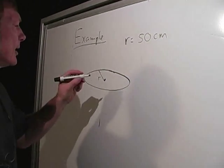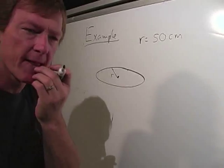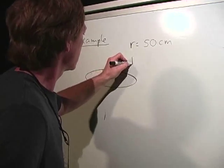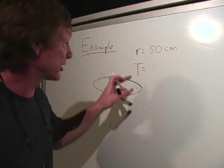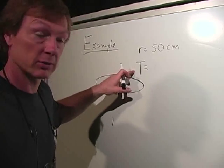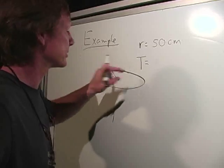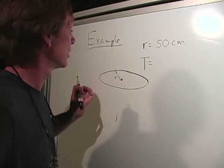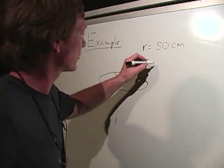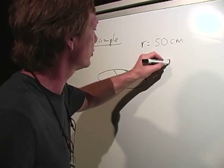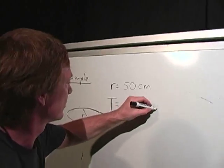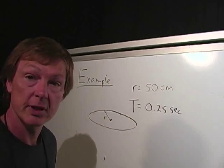And let's say the radius is 50 centimeters. And let's say the time it takes to go around once. That's the period, capital T, because period's a special time. It's the time it takes to go around just once. So the period, let's say, is 0.25 seconds.